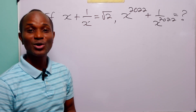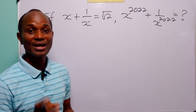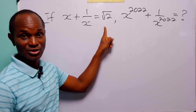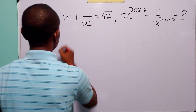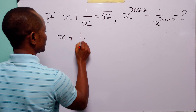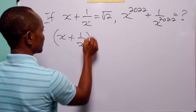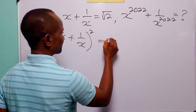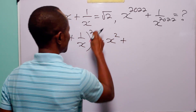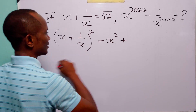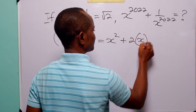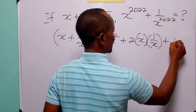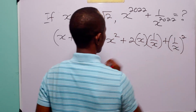To solve this problem, we do not need to first find the value of x. What we are going to do is square both sides of this first equation. When we do that, we have x plus 1 over x, squared. Opening this bracket, we have x squared plus 2 times x times 1 over x plus 1 over x squared.